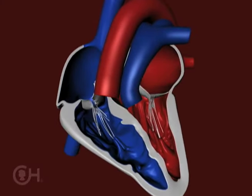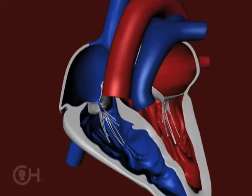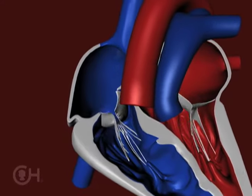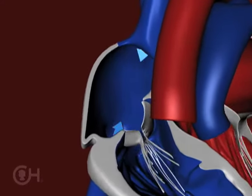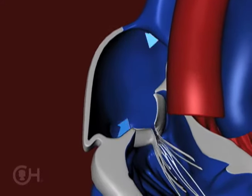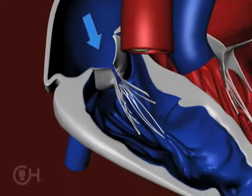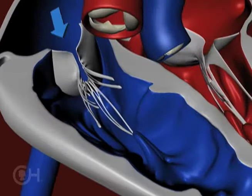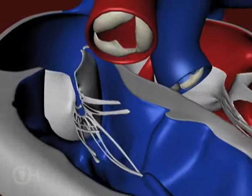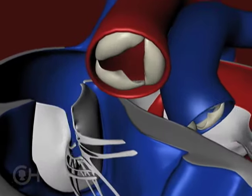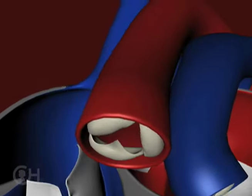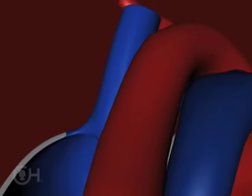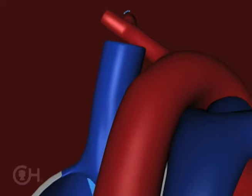What that means is that the blue blood comes back to the right atrium, to the right ventricle. But now instead of going to the lungs, it goes back out to the body. So you have blue blood going in a circle, never picking up oxygen.